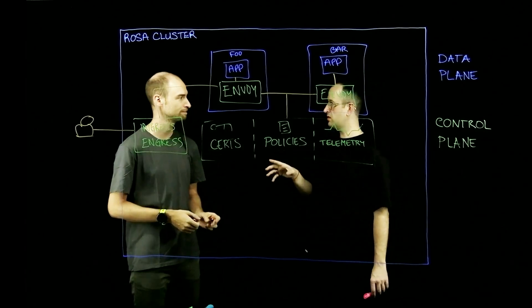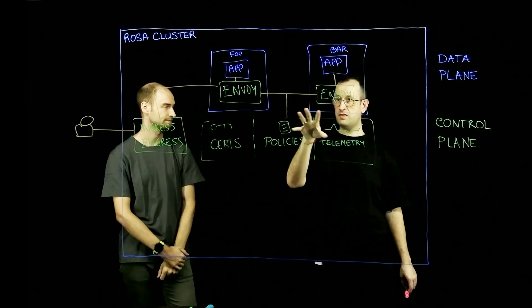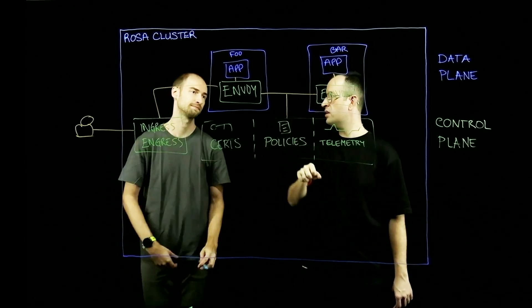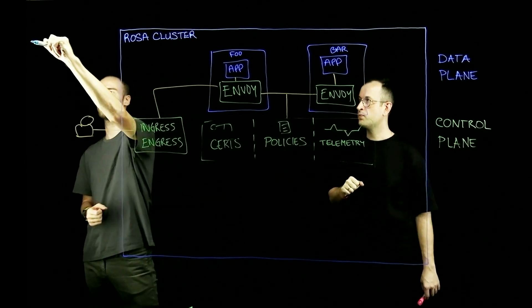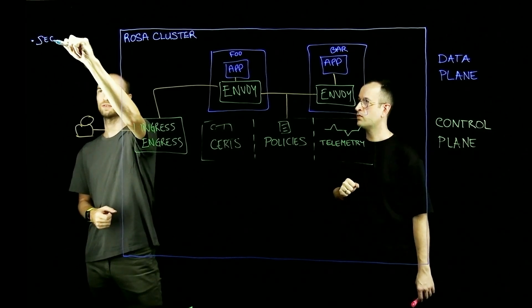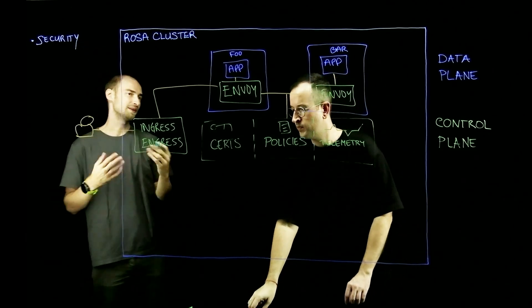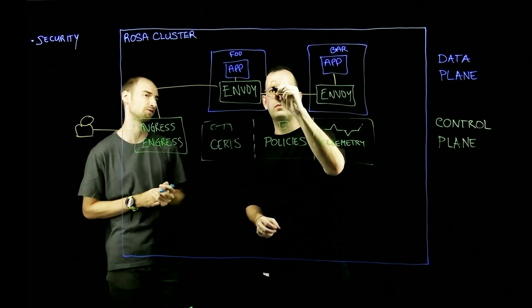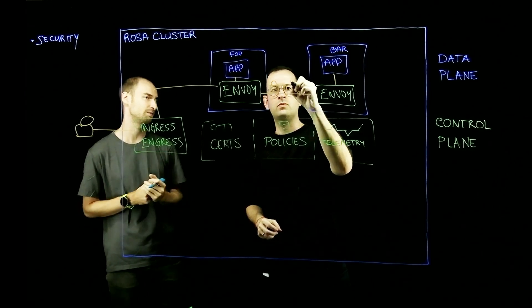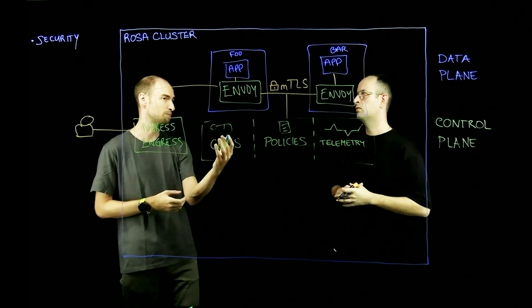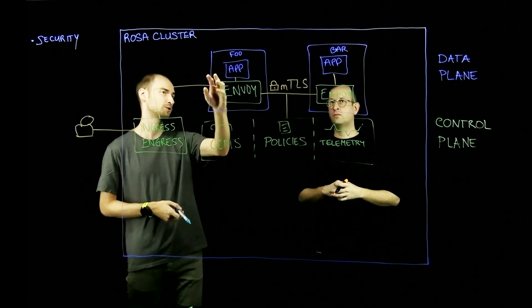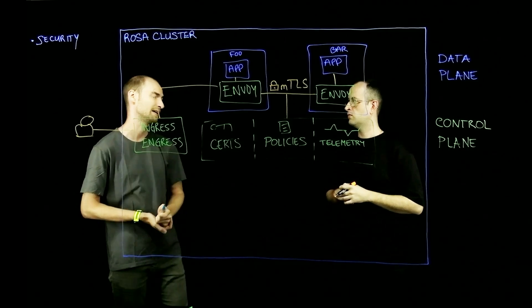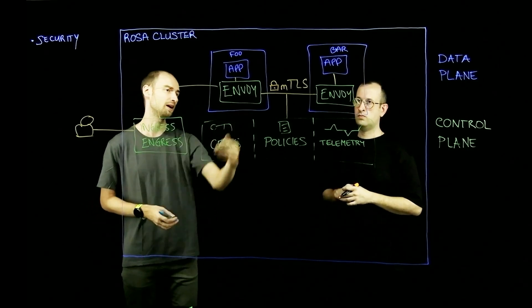Let's cover some common use cases. For service-to-service communication, you typically want encryption or the ability to allow or disallow communication between services. The number one reason people choose a Service Mesh is security. The control plane delivers certificates to the Envoy proxies and encrypts traffic between them via mutual TLS. This decouples the logic of encrypted traffic from the application — an application engineer doesn't need to worry about ensuring encrypted communication; they rely on the Envoy proxies to handle that.